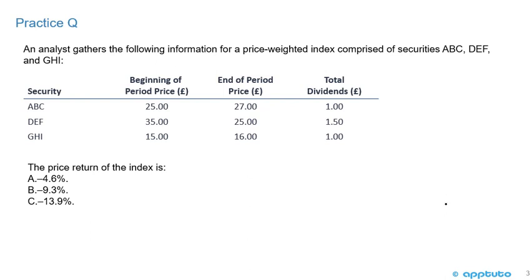Let's look at a practice question. An analyst gathers the following information for a price-weighted index comprised of securities ABC, DEF, and GHI. ABC has a beginning period price of 25, ending price 27, and dividend of 1. DEF has a beginning price of 35, ending price 25, and total dividends of 1.50. GHI has a beginning price of 15, ending price 16, and total dividends of 1.